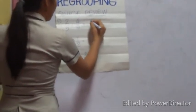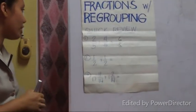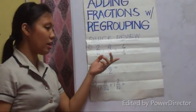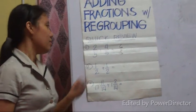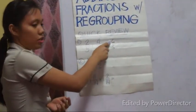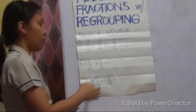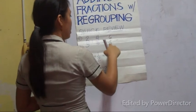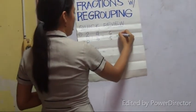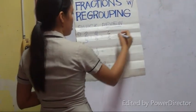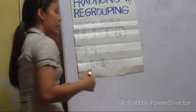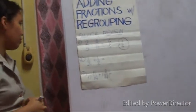Five and six. Okay, perfect. So, is this already in the simplest form? Not yet, right? Because the numerator is larger than the denominator. So, let's convert this. Six divided by five is one with a remainder of one. So this is now our final answer in its simplified form.